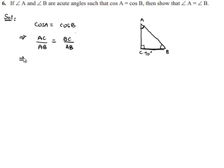Which implies we get AC is equal to BC, as the denominator on both sides of equality is the same and can be cancelled. So here we got AC is equal to BC.